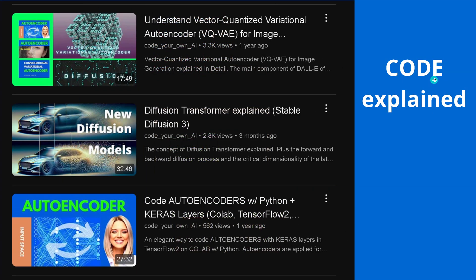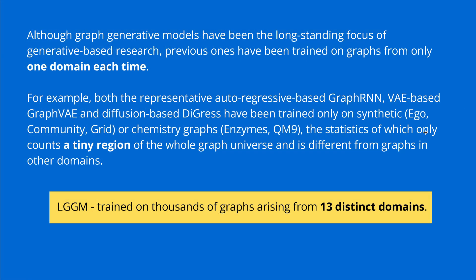If you want to see the pure code, you can have it in TensorFlow, in Keras layers where we code the Autoencoder. I show how to understand vector-quantized variational autoencoders and the latest in diffusion transformer technology. So the methodology is known. What is now specific, as the authors stressed, is that in the old days there was only one domain - each time one graph was trained - and now they have finally multi-domain training.